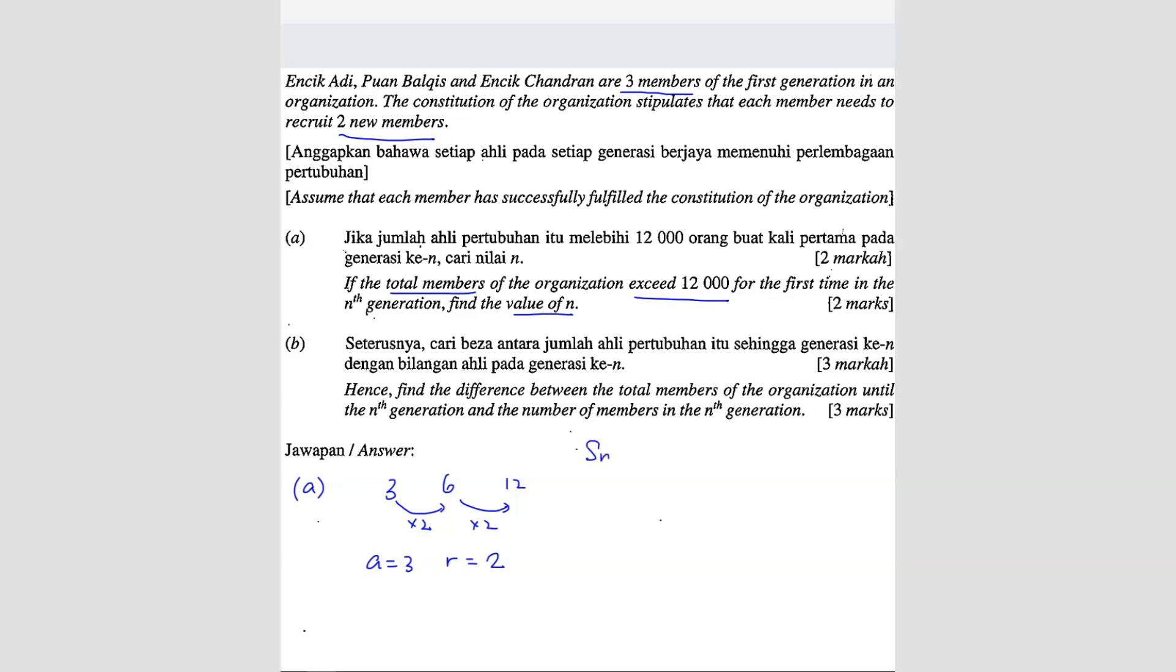So SN exceed 12,000. So that's what they want us to do. They gave us that information and they want us to find the value of n. So we just have to use the SN formula.